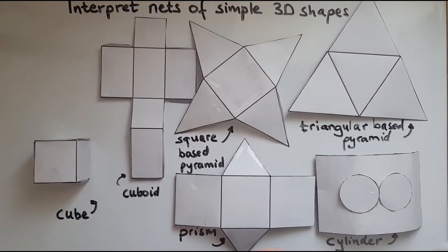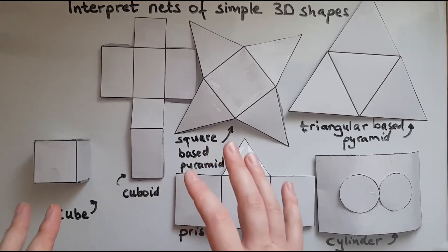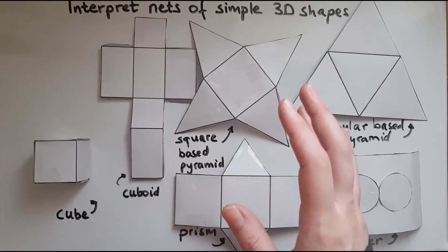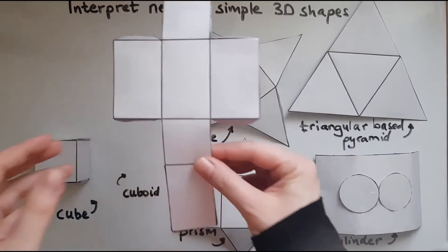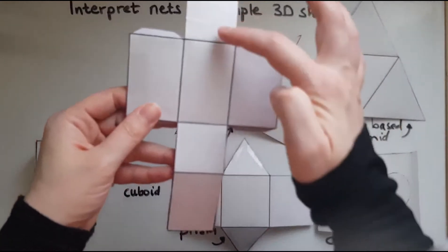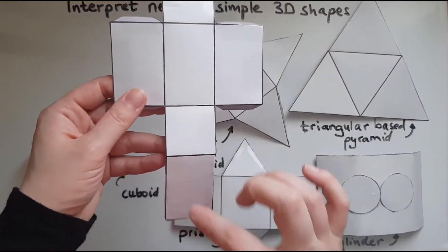Now we're looking at the cuboid. What is different? Now we've got six faces, but they are of different sizes. So we have these two being the same and these four being the same.